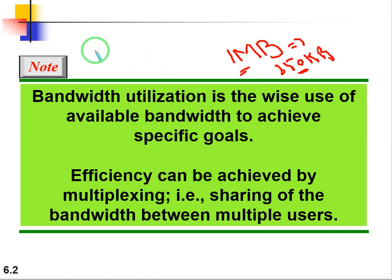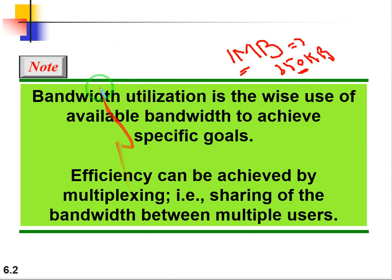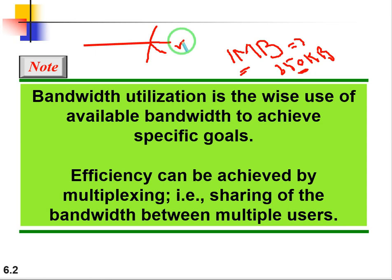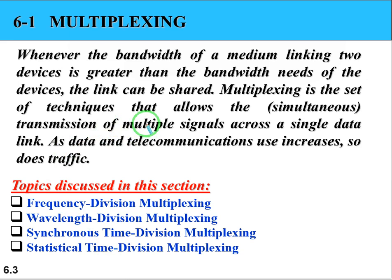Efficiency can be achieved by multiplexing. Multiplexing is simply the sharing of bandwidth between multiple users. For example, one bandwidth or channel is divided among four users — user one, user two, user three, and user four. One link is divided into multiple users. This is the basic concept of multiplexing.